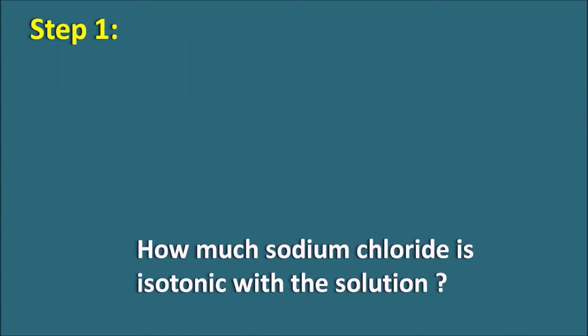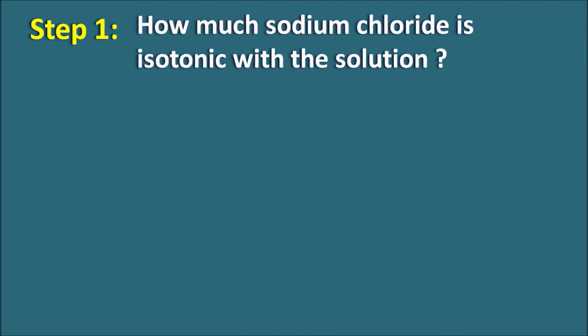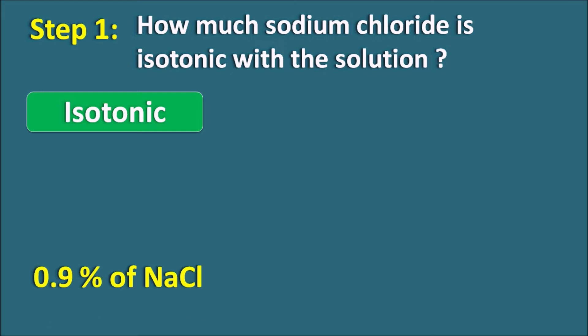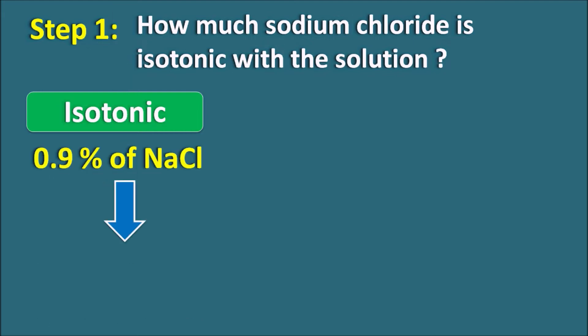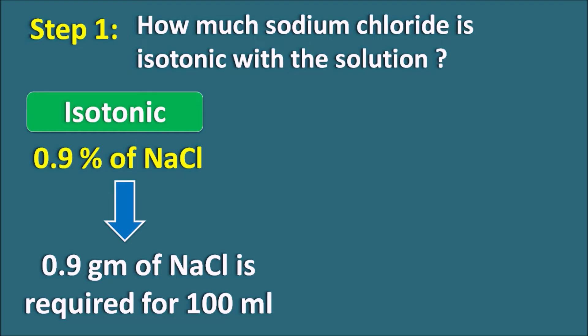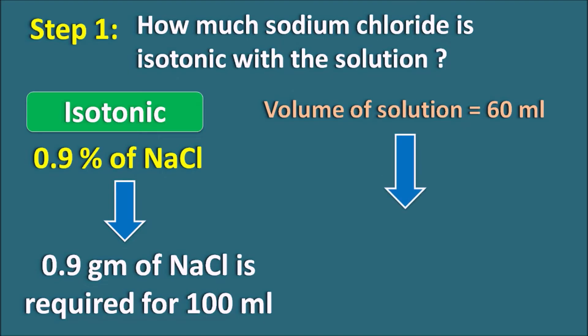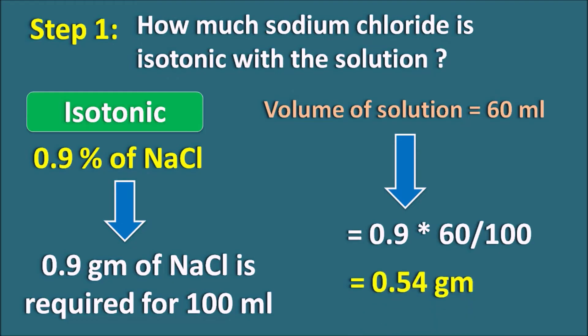Step 1 — how much Sodium Chloride is isotonic with the solution? For isotonicity, 0.9 grams of Sodium Chloride is required for 100 ml. But here the volume is 60 ml, not 100 ml. For 60 ml, the amount required is 0.9 × 60/100 = 0.54 grams of Sodium Chloride.